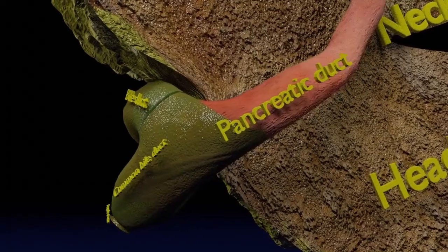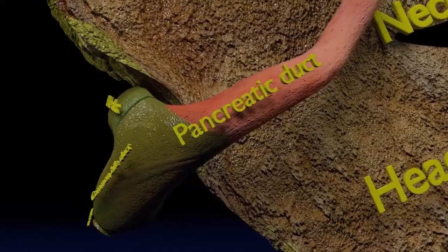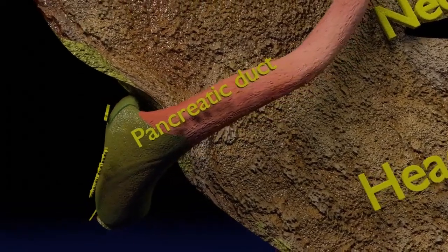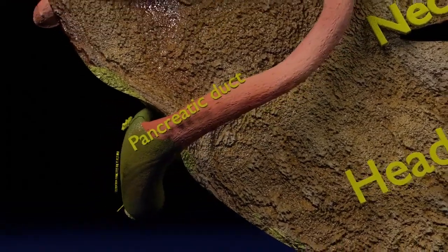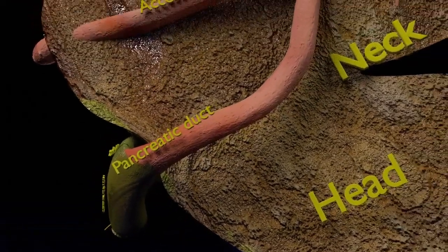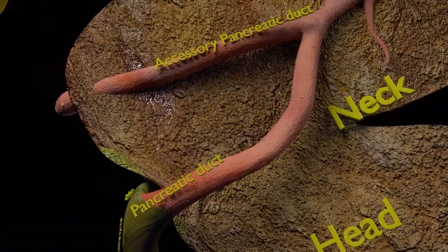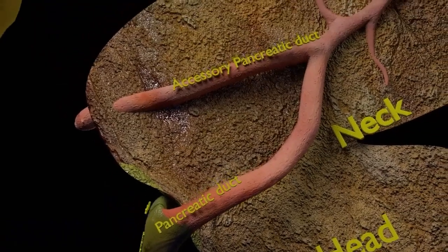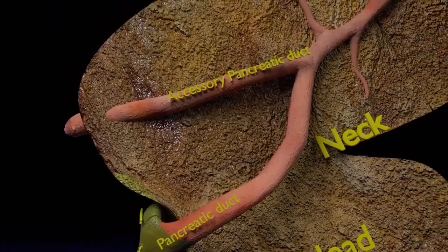In some individuals, there is an additional accessory pancreatic duct which drains directly into the second part of the duodenum.